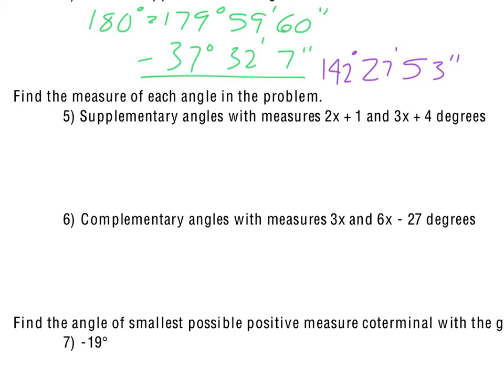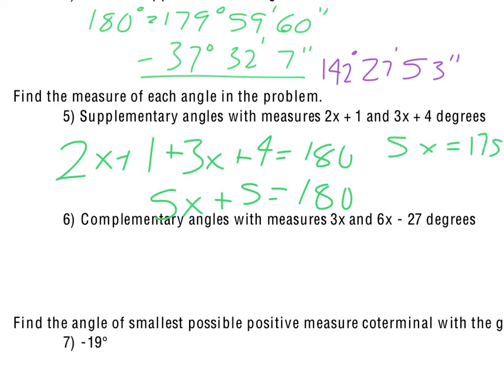For number 5, they just tell us the angles are supplementary. They give us the angle measures, the angle measures being 2x plus 1 and 3x plus 4. So since they are supplementary, then the 2x plus 1 plus the 3x plus 4 would equal 180 degrees. We have a total of 5x plus 5 that equals 180 degrees. So we subtract the 5, we get 5x equals 175, divide by 5, we get x equals 35. However, that is not the answer.